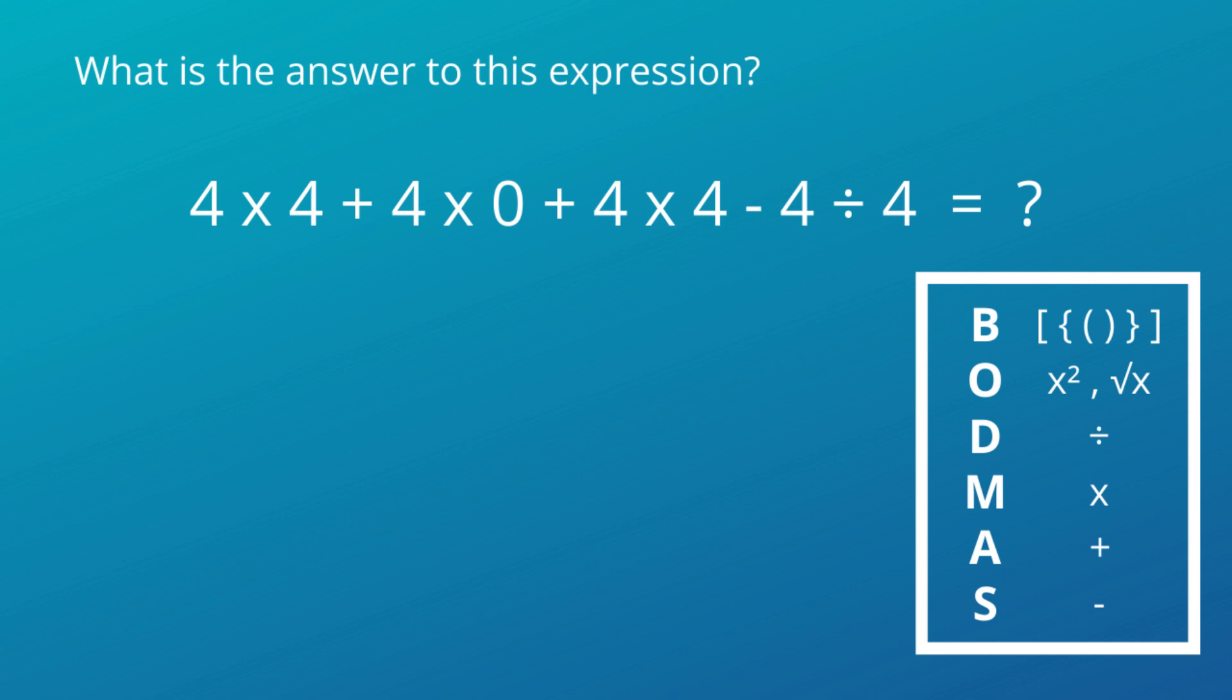Now, let's go back to our original question. In this expression, we can identify four operations: multiplication, addition, subtraction, and division. From those, we have to respect the division first according to the BODMAS rule. Let's simplify the expression now. 4 divided by 4 equals 1.